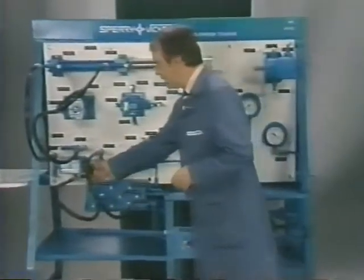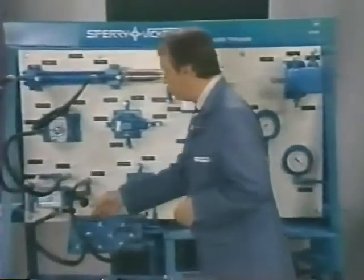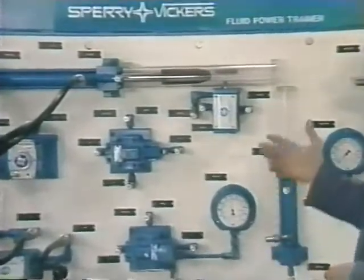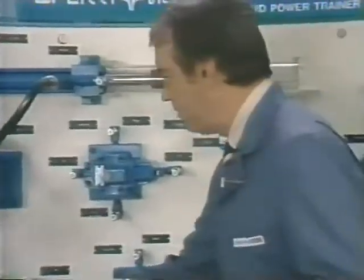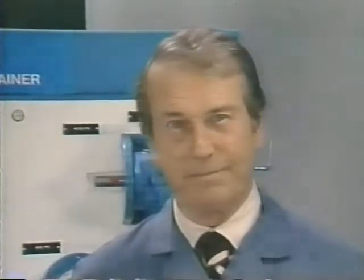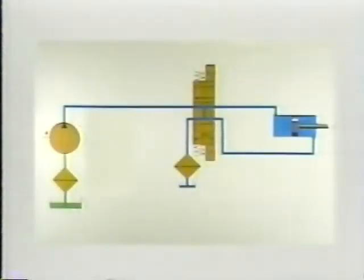This type of circuit with its slow feed forward and rapid return can be found on any number of machines. I'm Paul Cook for Sperry Vickers. Now, let's move to a graphic example of another circuit.